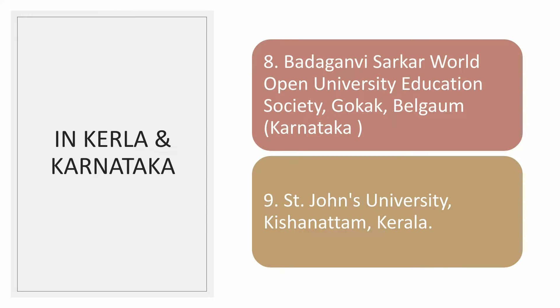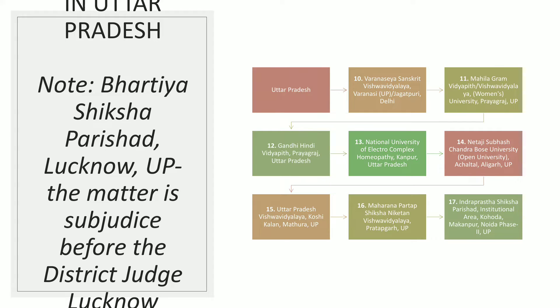Next, moving to Kerala and Karnataka. In Kerala the first fake university is St. John's University. Then we have: Vishwa Vidhyalaya Vidya Peet (2nd), Gandhi Hindi Vidya Peet (3rd), National University of Electro Complex (4th), Netaji Subhash Chandra Bose Open University (5th), and Uttar Pradesh Vishwavidyalaya (6th).